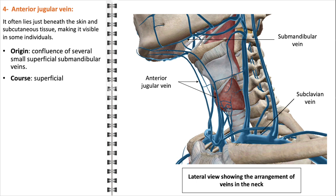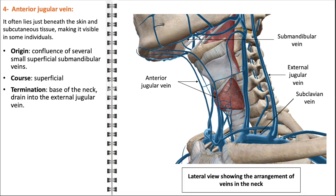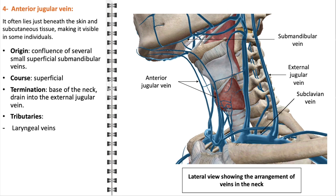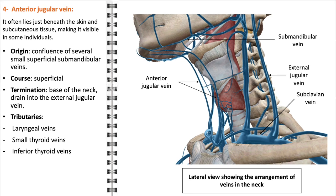The anterior jugular vein terminates at the base of the neck, where it generally drains into the external jugular vein, though there can be variations in its termination reflecting the diversity in human venous anatomy. Along its course, the anterior jugular vein receives several tributaries which enhance its drainage capacity, including the laryngeal veins, which drain the larynx; small thyroid veins, draining parts of the thyroid gland; and the inferior thyroid veins. These tributaries underscore the vein's role in draining blood from the thyroid region and the lower parts of the throat.